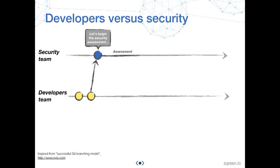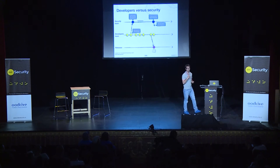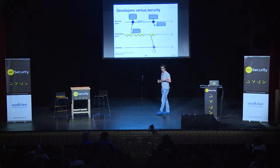We will look at a slightly modified version of it. You have a developer team and a security team. The security team starts a security assessment — they need a stable, working version of the source code. While the security assessment is going on, the developers keep working. Eventually, the security assessment is over and the security guys want all their findings fixed right away — all the vulnerabilities corrected in the source code.